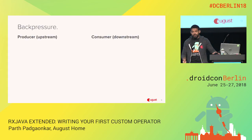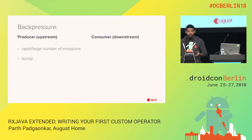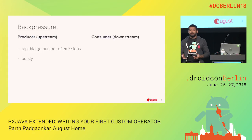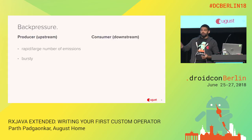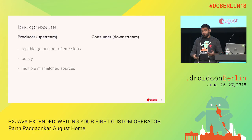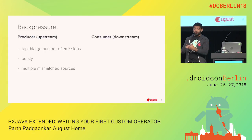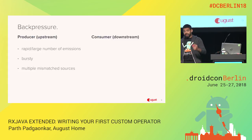Backpressure can happen in a couple of different situations. It can happen if your producer is very fast — if you have a large number of emissions or if they happen really quickly. Or if most of the time the producer operates normally but you get hammered with data sometimes, like if your user is drawing a signature on screen. Or if you have multiple mismatched sources — say you have two infinite streams and one emits twice as fast as the other, and you zip those streams together. Eventually you're going to run out of memory, and that's going to cause backpressure.